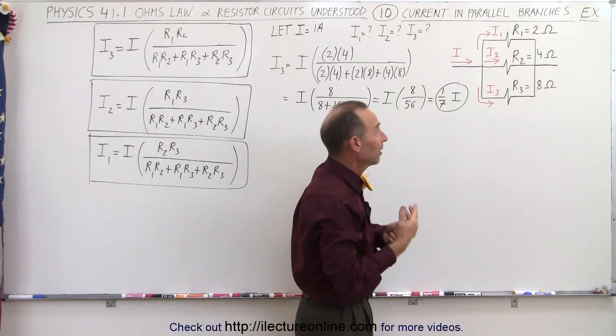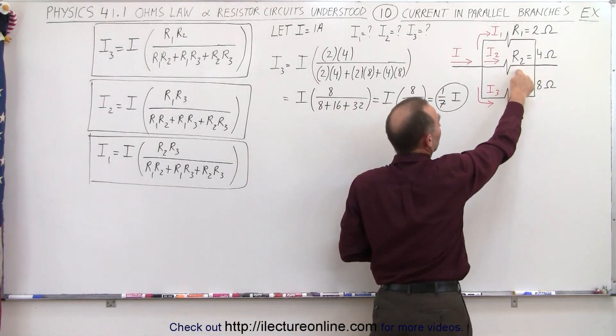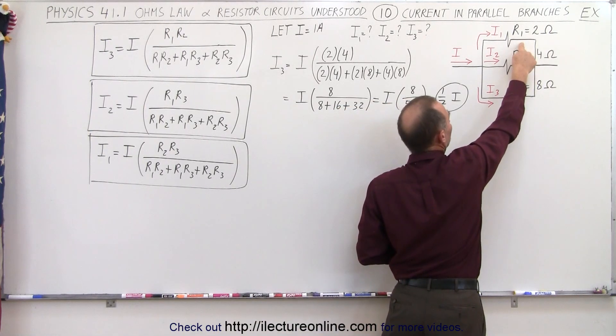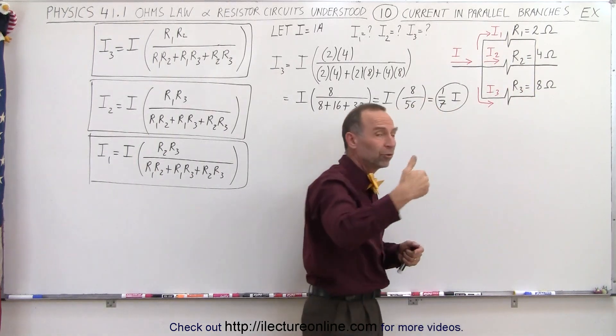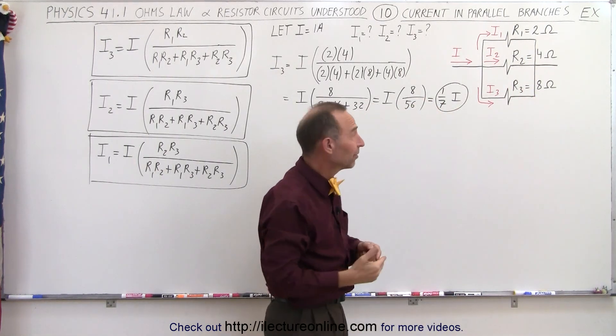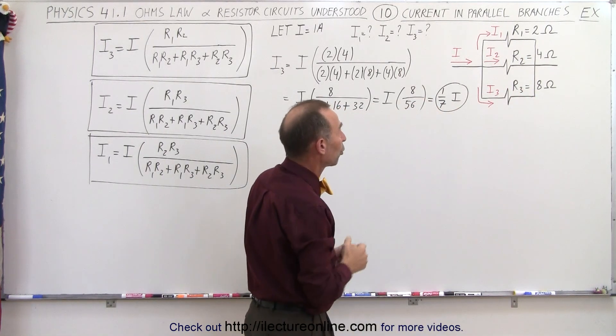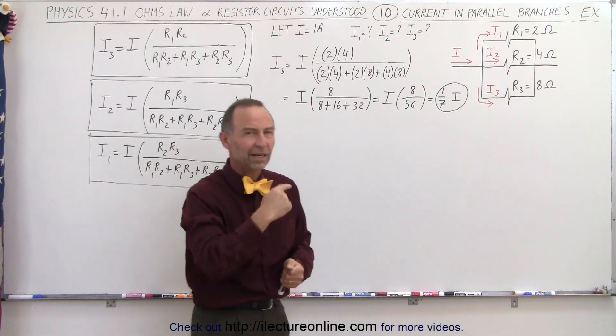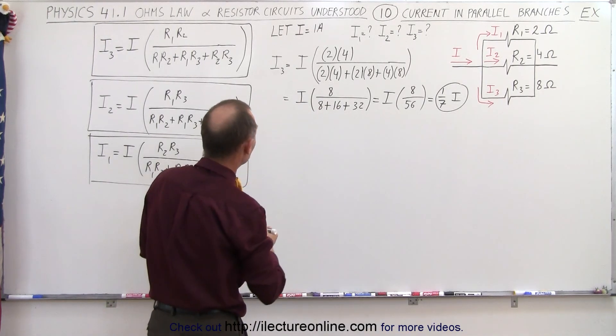So actually, at this point, we can already assume that the current through here will be 2/7ths, and the current through there will be 4/7ths. 1/7th plus 2/7ths plus 4/7ths is 7/7ths, or the total current. But let's just see if the equations do work out that way, and we get the same result.